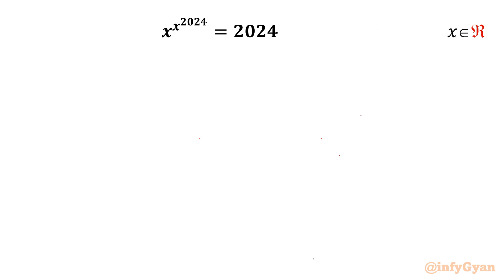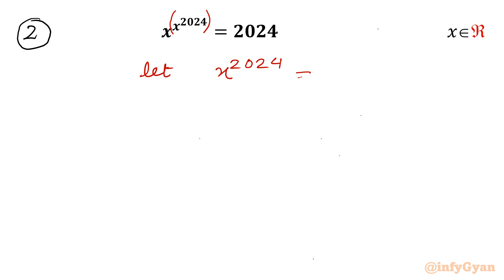Let us consider question number 2. Here I will begin with a substitution. Let us consider x raised to the power 2024 equal to a. So this exponent part becomes a. Now I need to convert x in terms of a — I will raise both sides to the power 1 over 2024, giving x equal to a raised to the power 1 over 2024. That is our substitution.